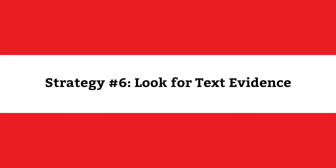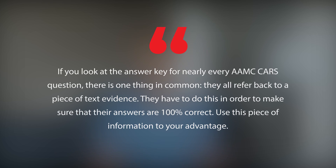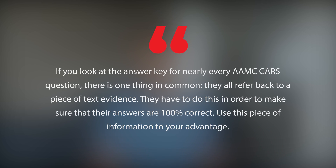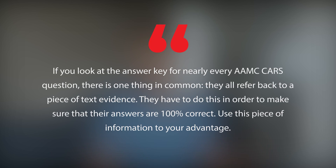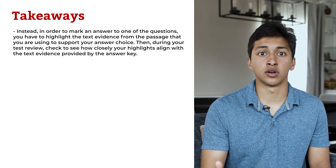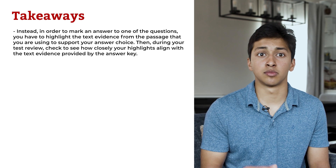MCAT CARS strategy number 6: look for text evidence. If you look at the answer key for nearly every AAMC CARS question, there is one thing in common — they all refer back to a piece of text evidence. They have to do this in order to make sure their answers are 100% correct. Use this to your advantage. We know that the support for the correct answer is somewhere in the passage; we just have to find the text evidence that supports it. In this strategy, you don't highlight anything from the passage as you read through it. Instead, to mark an answer to one of the questions, you have to highlight the text evidence from the passage that supports your answer choice.